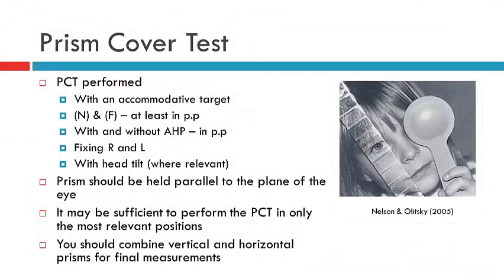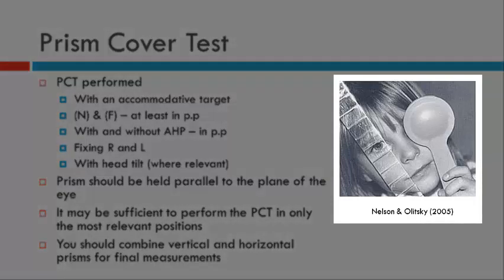Another assessment you can do with the prism cover test is not only measure the deviation in the nine positions of gaze but also with the head tilted. We'll talk more about this in a subsequent video when we discuss the Bielschowski head tilt test, but please be aware that you have two additional positions you can measure with the PCT: tilt right and tilt left. The image to the right shows the patient being assessed with the head tilted to the right.